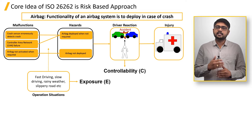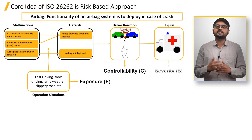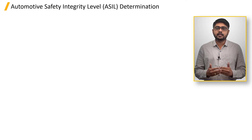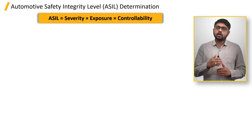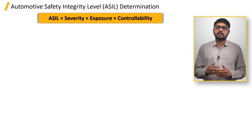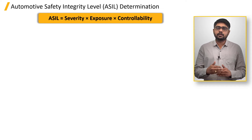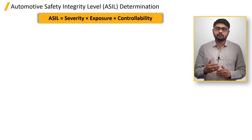Each hazard is assigned to a Safety Integrity Level, SIL, based on a risk graph. In the context of automotive functionalities, these SIL levels are referred to as Automotive Safety Integrity Levels, called ASIL.